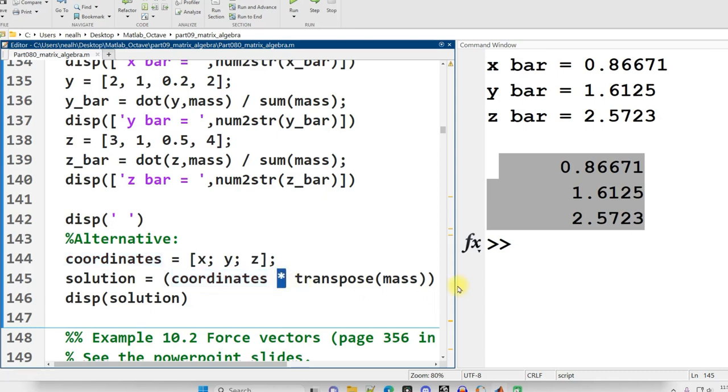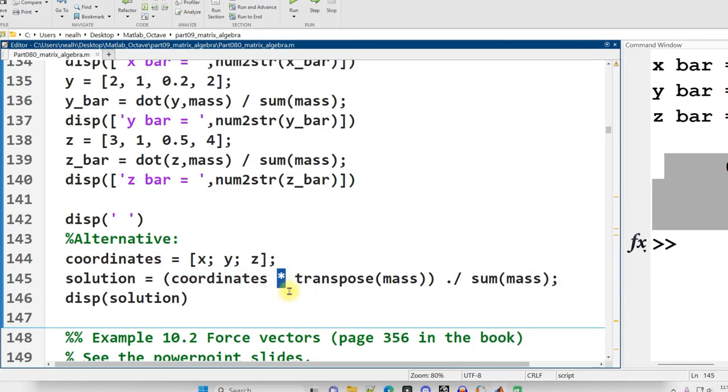So my solution is my coordinates matrix, matrix multiplied, a sequence of dot products, with the transpose of the mass vector, and then all of that element-wise divided, not matrix divided, but element-wise divided, with the sum of the masses. And I get my solution right there. And that's it.